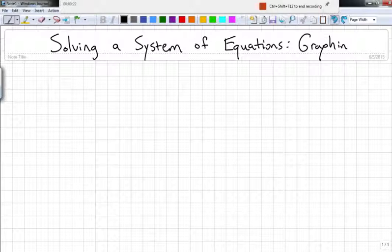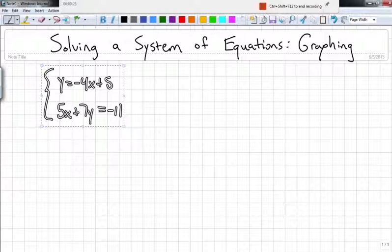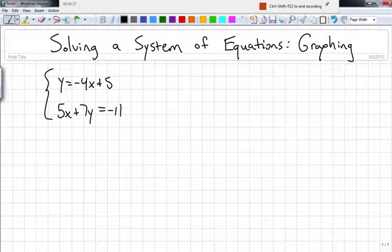So let's take a look at one to start. Here's one: y equals negative 4x plus 5, and 5x plus 7y equals negative 11.